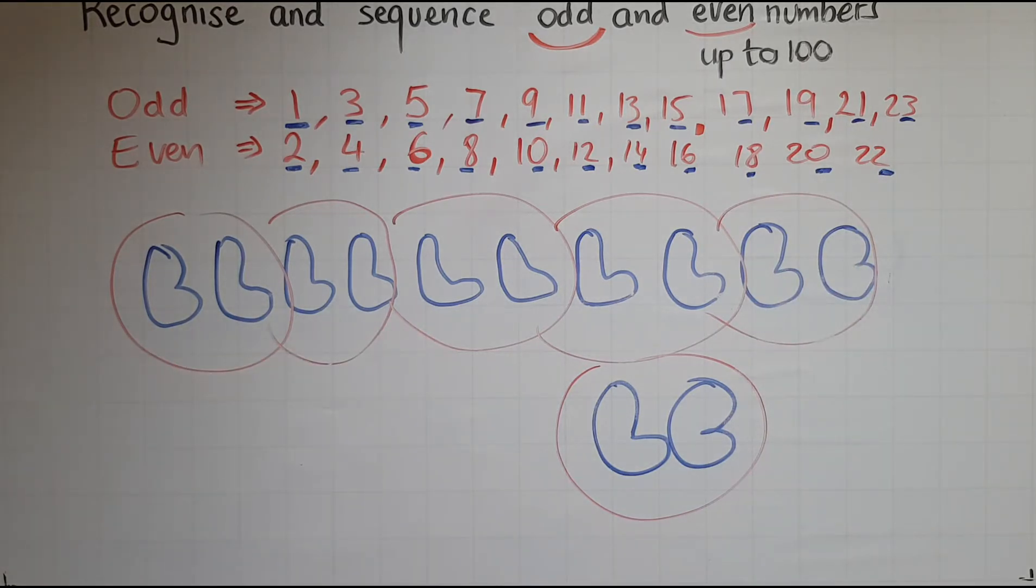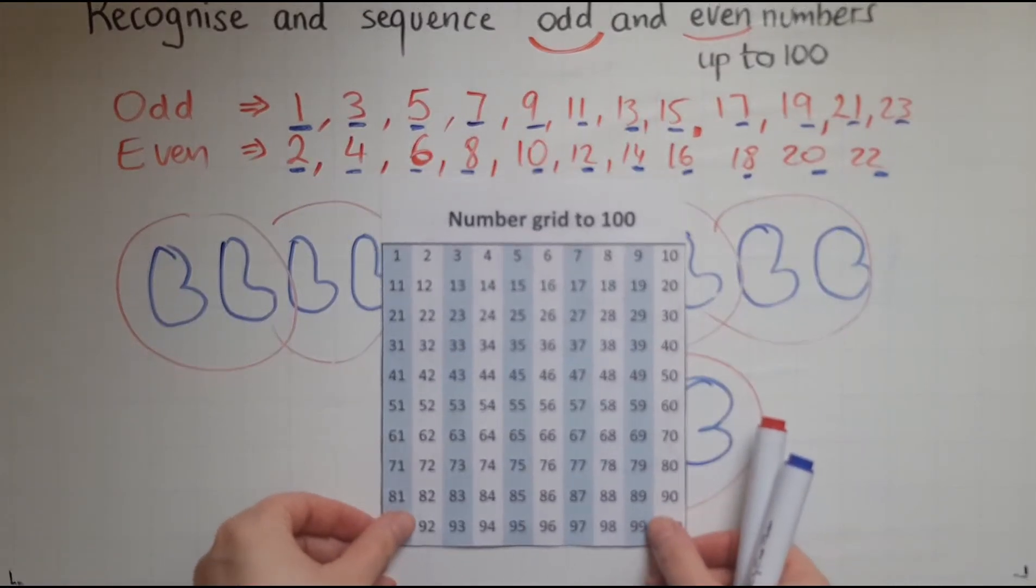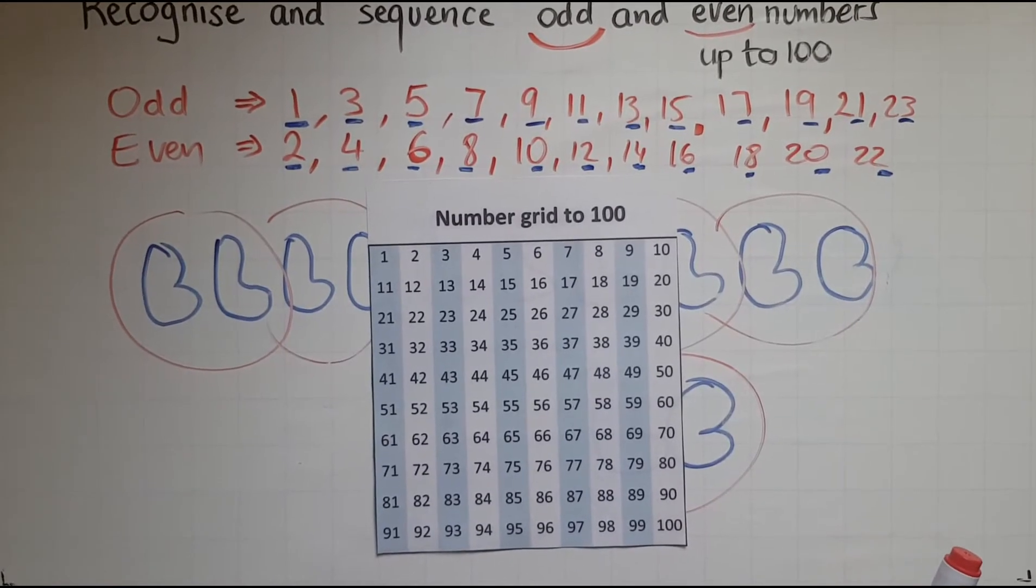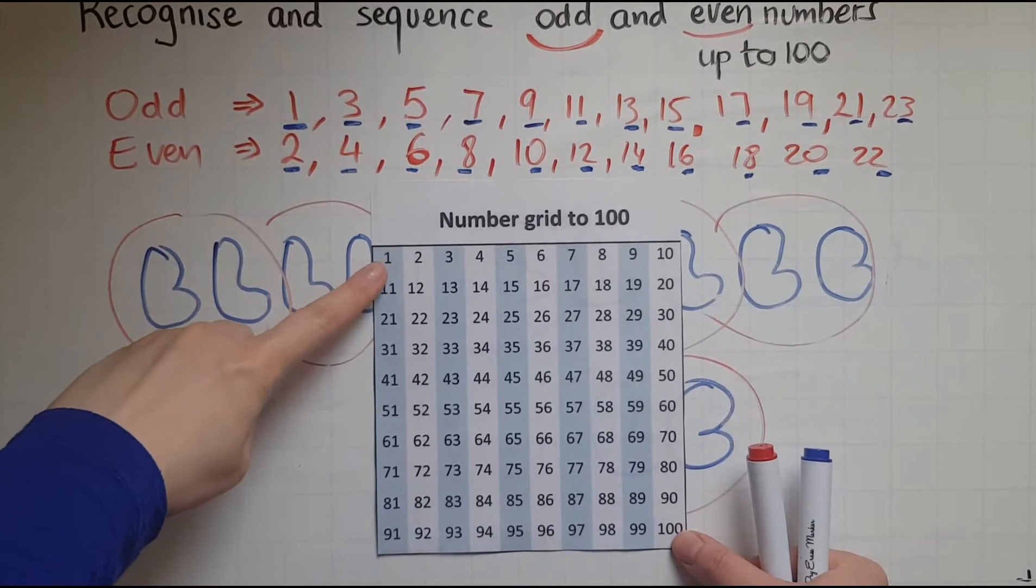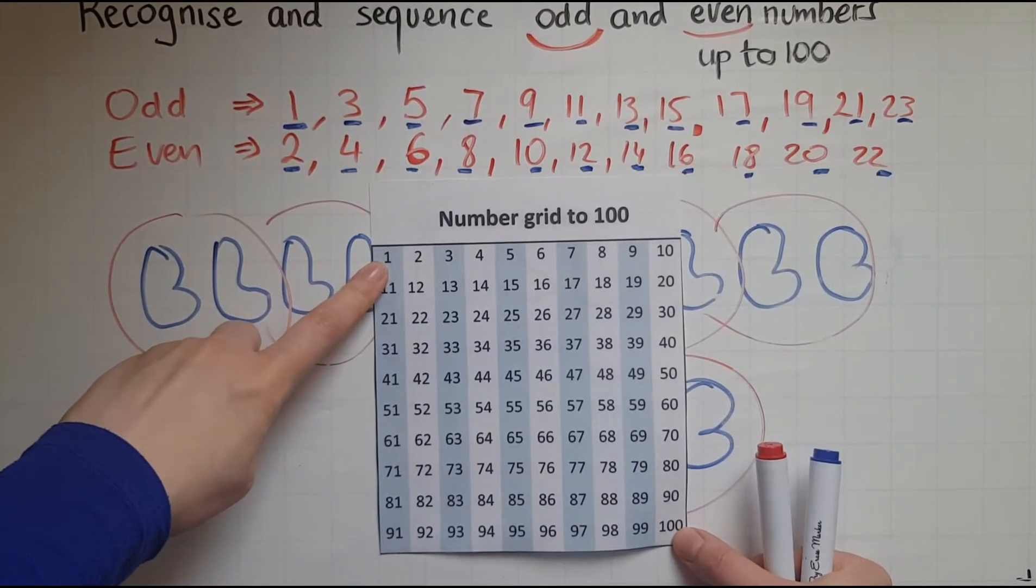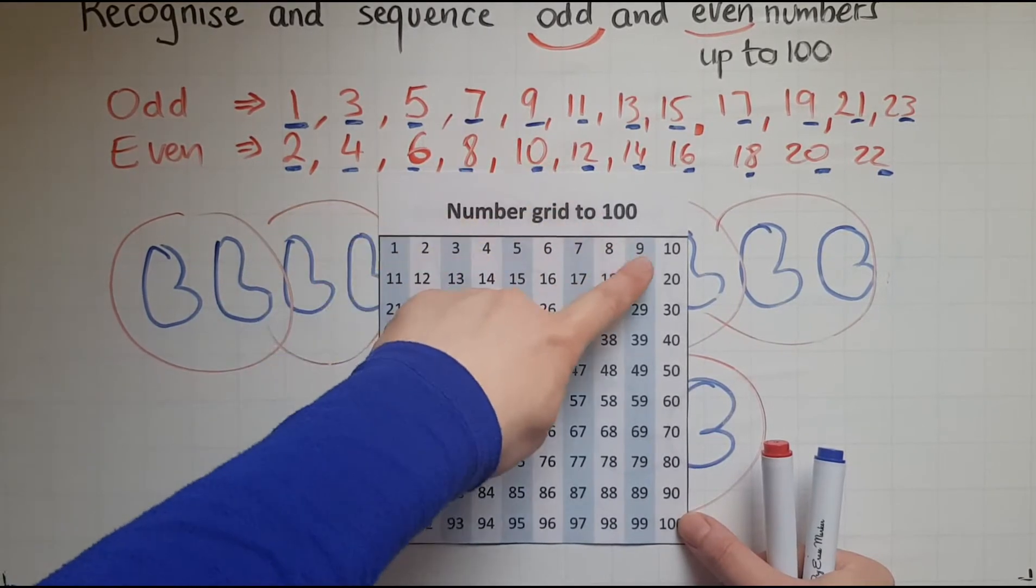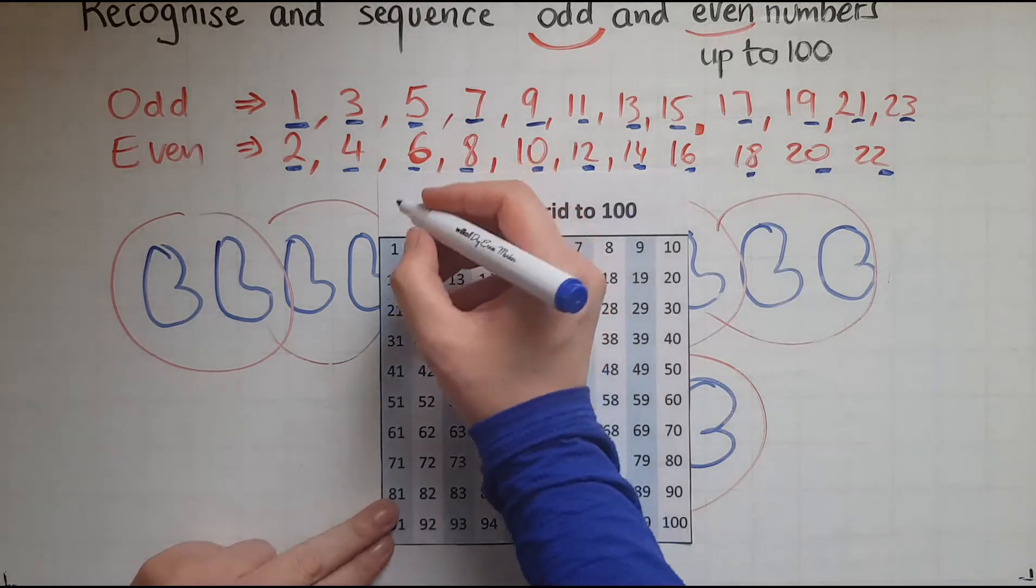And how does that look like in a number grid? So I've got a number grid here with numbers from 1 to 100. And as you can see, 1 is odd, 3 odd, 5, 7, 9 is odd. So the blue ones are odd.